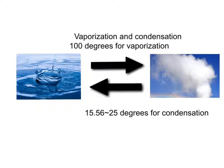My last slide is talking about vaporization and condensation. It talks about the phase change from liquid to gas and gas to liquid. The phase change from liquid to gas is vaporization and gas to liquid is called condensation. When it's vaporizing, it's getting energy of heat and when condensing, it's losing energy. For vaporization, it starts at 100 degrees and condensation starts at 15.56 to 25 degrees.